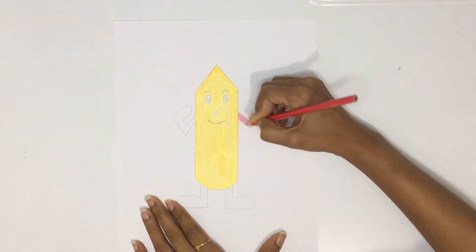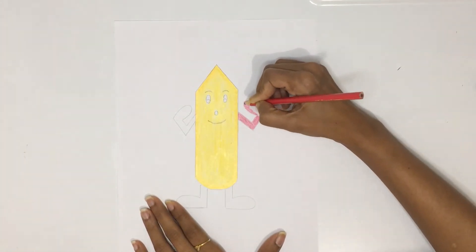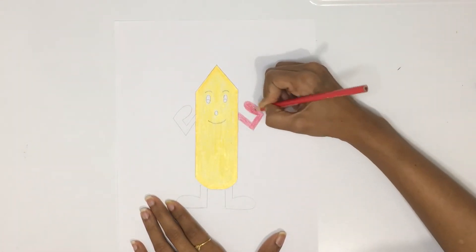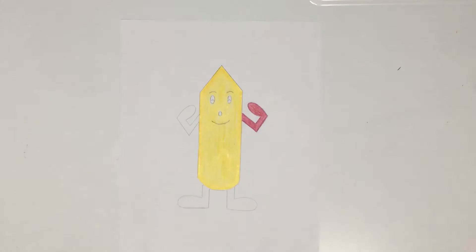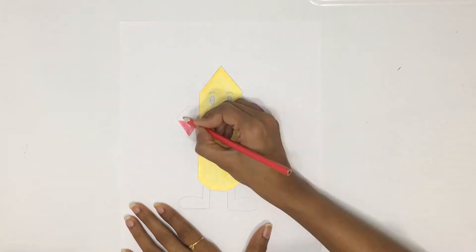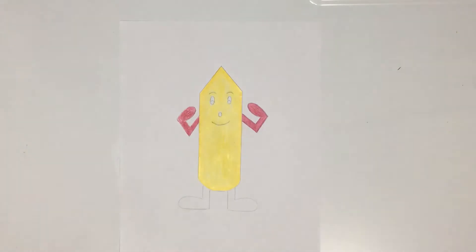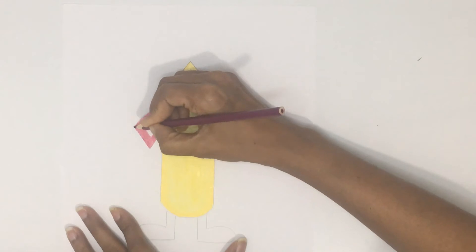Then I colored the two hands with magenta, and the border with purple. I always recommend adding a border so that your picture will be enhanced.